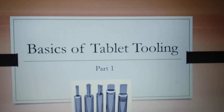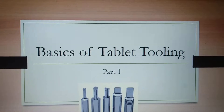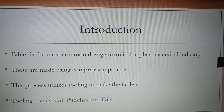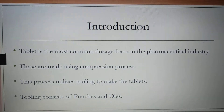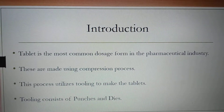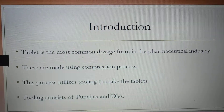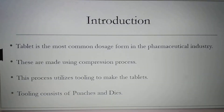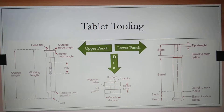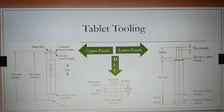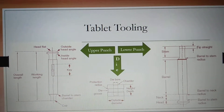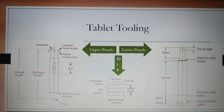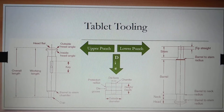Hello friends, today we are going to learn some basics about tablet tooling. As you know, tablet is the most common dosage form in the pharmaceutical industry. These are made using a compression process which involves the usage of toolings. The toolings consist of punches and dies. This is the basic representation of tablet tooling — it consists of the upper punch, the lower punch, and the die.